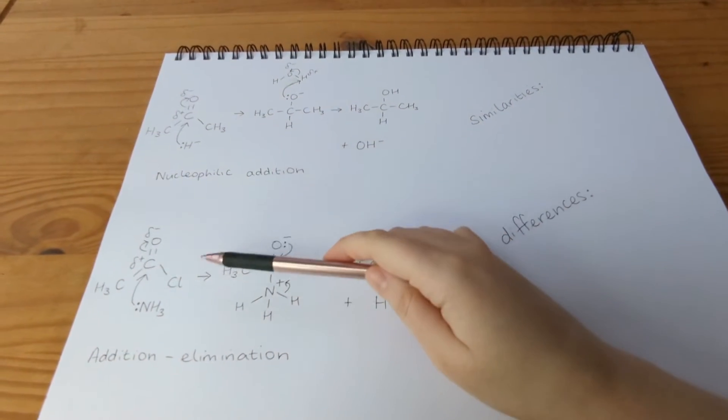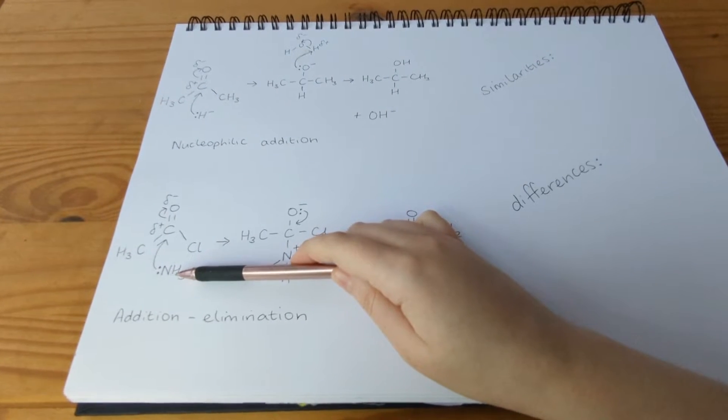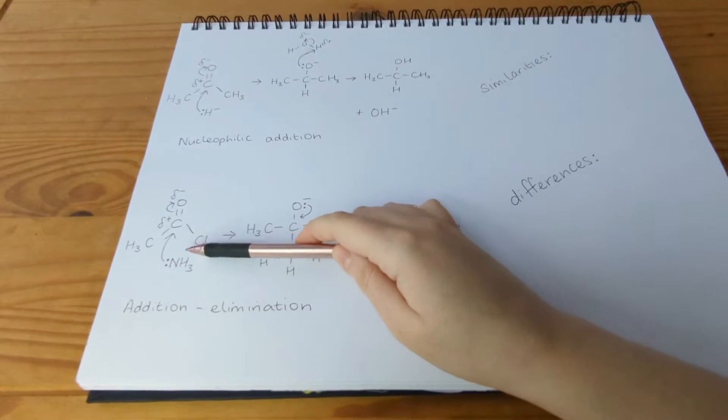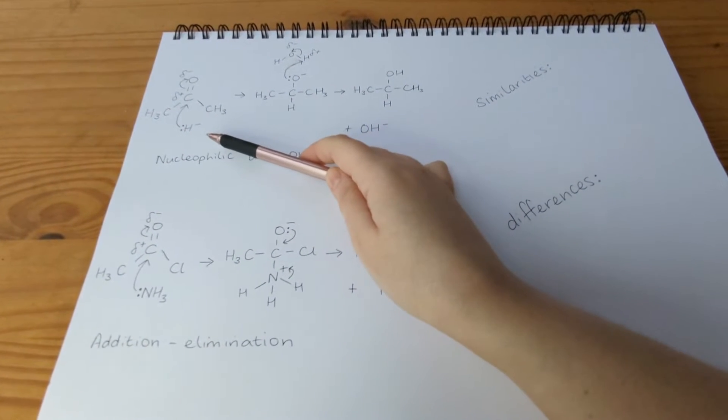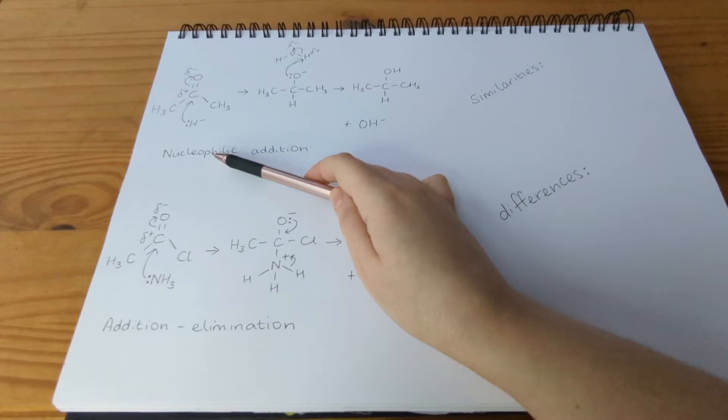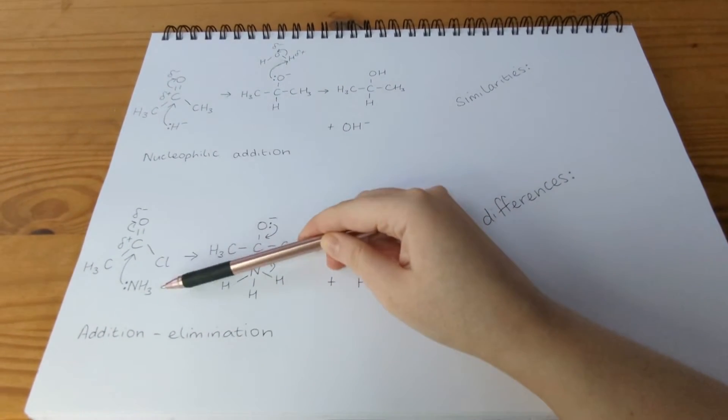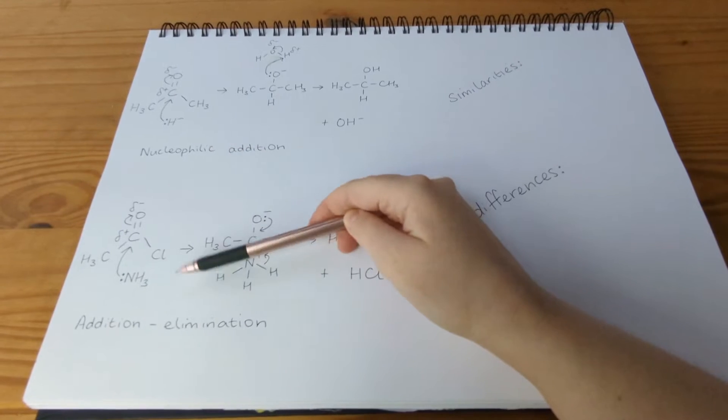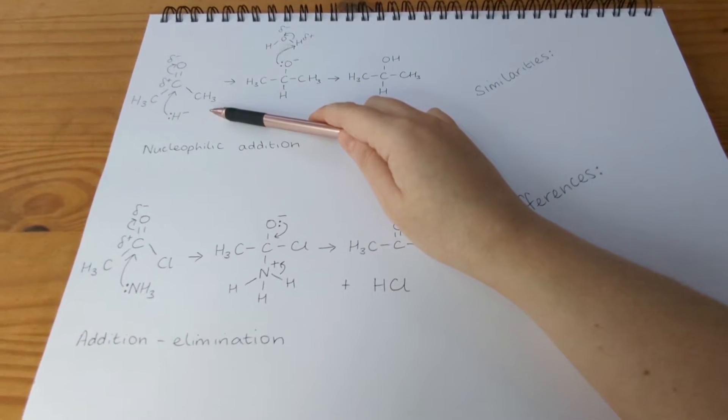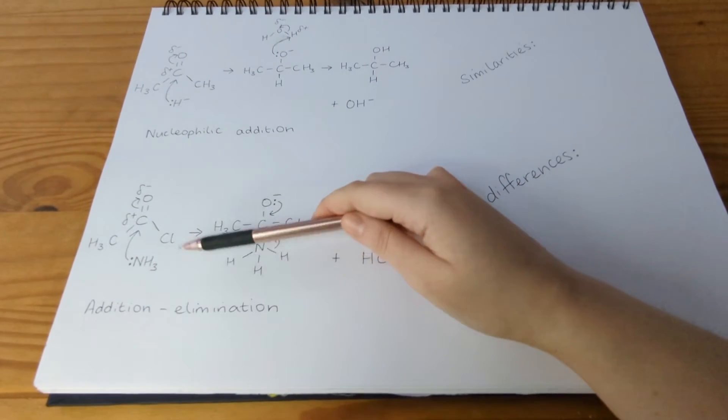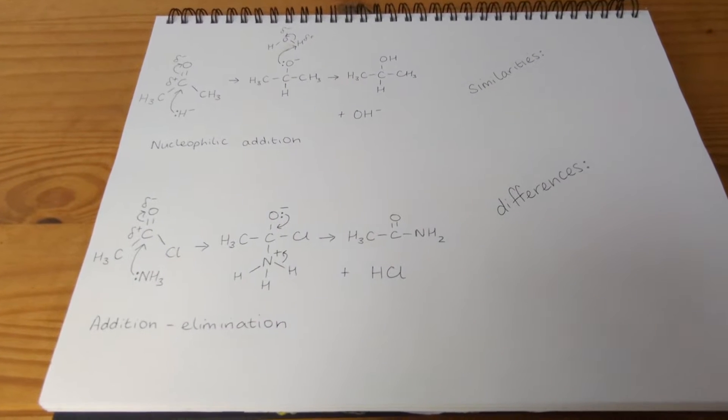So if we have a look at the nucleophile, remember a nucleophile is an electron pair donor. It's ammonia in the addition-elimination mechanism, and a hydride ion, which is H- in the nucleophilic addition mechanism. So the nucleophile is different in both, and you can see it has a charge in the nucleophilic addition mechanism, where it doesn't in the addition-elimination one. So that's our first difference.